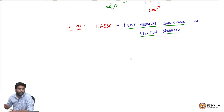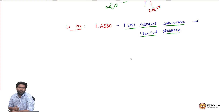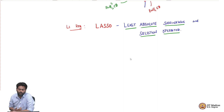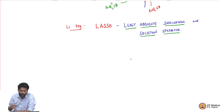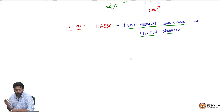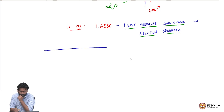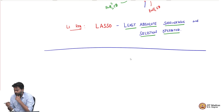Now the question is: why do we not just do lasso? If lasso gives us benefits in terms of pushing values to exactly zero, why would anyone even want to do ridge when lasso seems better? There are some advantages of doing ridge over lasso, and let me point out a few things.